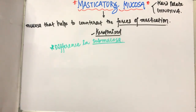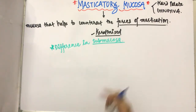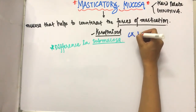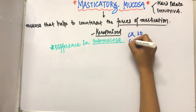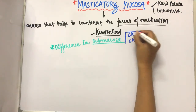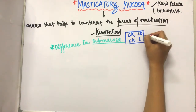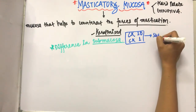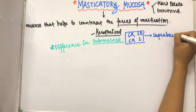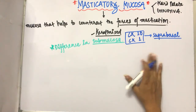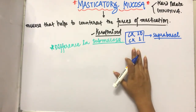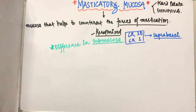The difference in masticatory mucosa is seen in the submucosa. Additionally, CK10 and CK1 proteins are present in the masticatory mucosa in the supra basal layer.